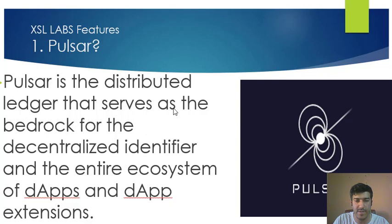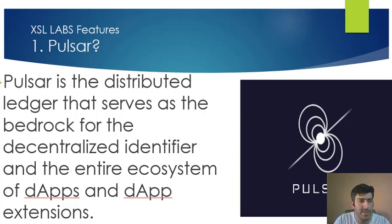The first feature is Pulsar. Pulsar is the distributed ledger that serves as the bedrock for the decentralized identifier and the entire ecosystem of dApps and dApp extensions. In simple terms, a distributed ledger is a type of database that is shared, replicated, and synchronized among the members of a decentralized network, recording transactions such as the exchange of assets or data among participants.